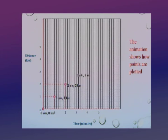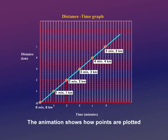Similarly we plot the three-minute three-kilometer point, the four-minute four-kilometer point, and the five-minute five-kilometer point. Then we join all these points by a line, and this is your graph representing the data. This is called a distance-time graph.